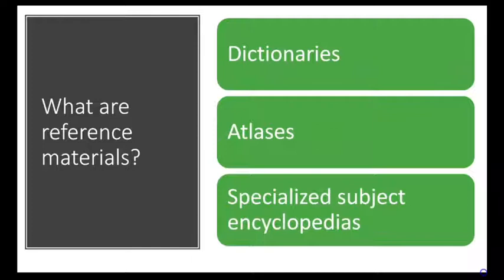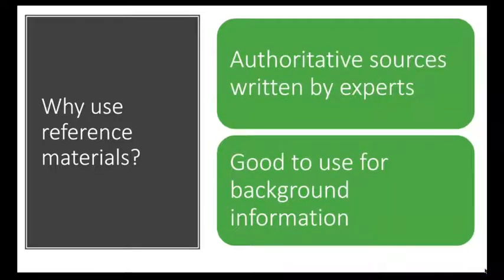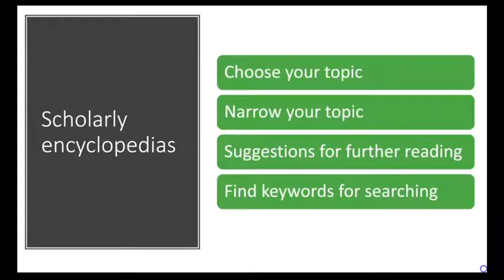First, let's talk about what a reference collection is and why you would use one. Reference materials include dictionaries, atlases, and specialized subject encyclopedias. They're written by people with expertise in a subject and are reviewed for accuracy, making them a good way to find background information about your topic. Encyclopedias are a common type of reference material — they're a great place to start a research project because they can help you choose and narrow your topic, provide suggestions for further readings, and help you determine strong keywords for your searches.